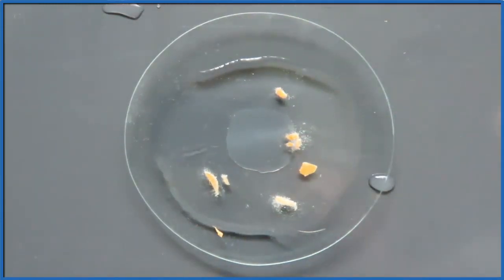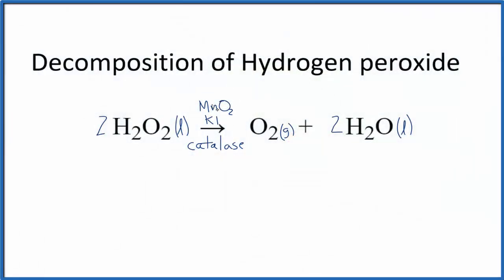One last thing to note, that we put the catalyst like the manganese(IV) oxide or the catalase above the arrow here. The catalyst makes the decomposition take place, but it doesn't get used up. It's the same at the beginning and the end of the reaction. The hydrogen peroxide, it's gone, it's changed into oxygen and water. This is Dr. B with the decomposition of hydrogen peroxide. Thanks for watching.